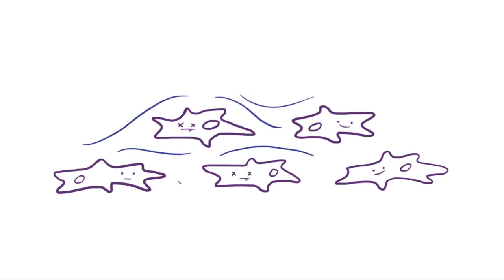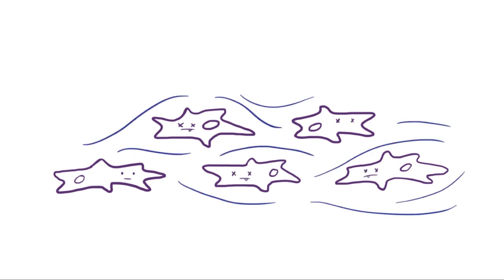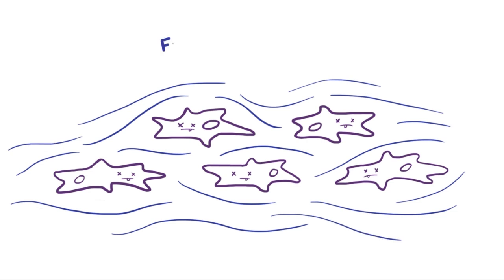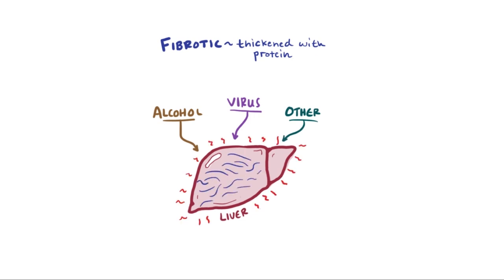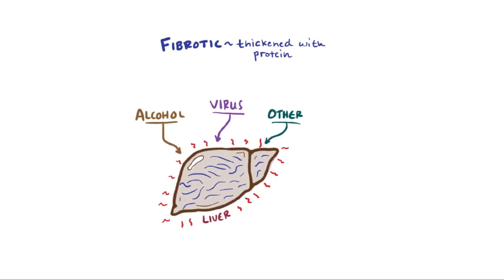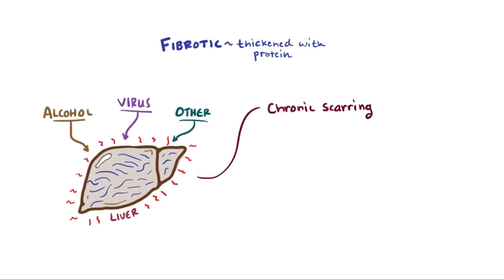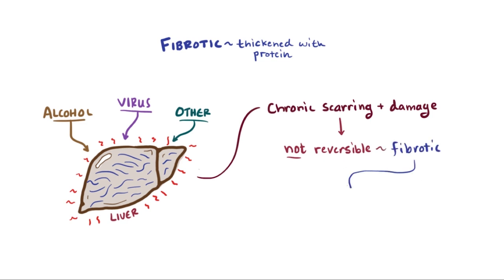When cells are injured or damaged and die off, usually that dead tissue becomes fibrotic — thickened with heaps of protein forming scar tissue. So when your liver is constantly forced to process alcohol, like in alcoholic liver disease, or subject to a viral attack like HBV, or anything else causing chronic hepatocyte destruction and inflammation, your liver can become seriously scarred and damaged to the point where it's no longer reversible. At this point it becomes fibrotic, and in the liver we call this process cirrhosis.